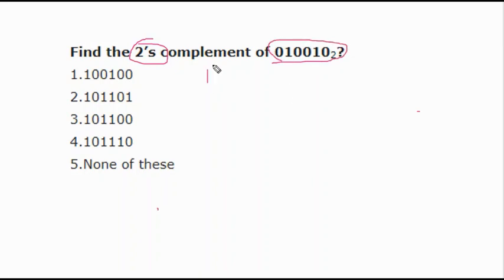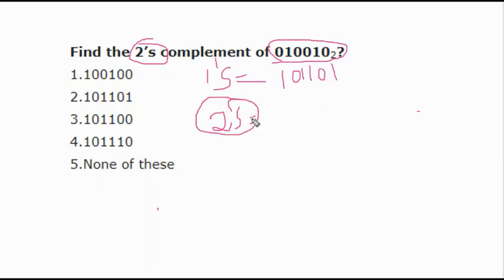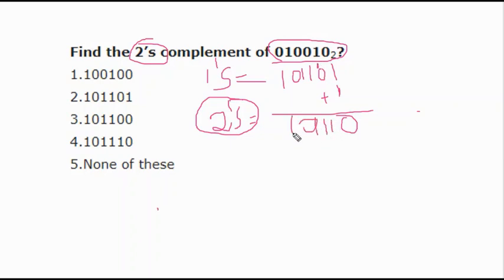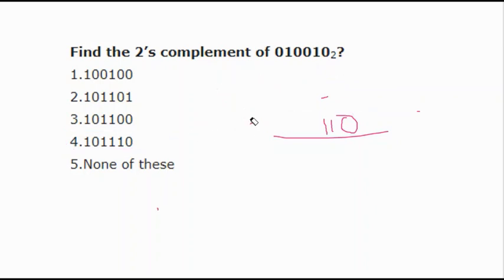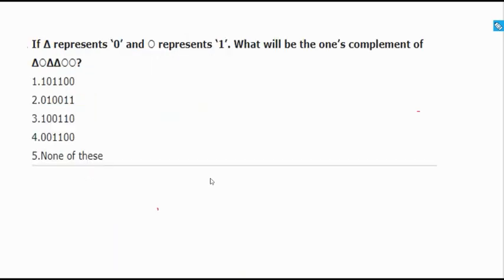Now for two's complement: first take the one's complement — 1 0 1 1 0 1. For two's complement, do not reconvert; instead, add 1 to the one's complement. Remember: 1 + 1 is not 2 in binary — write 0 and carry forward 1. So 1 + 1 = 0 carry 1, then 1 + 0 = 1, giving the result 1 0 1 1 0. The answer is confirmed. Understand the logic and nothing is impossible.